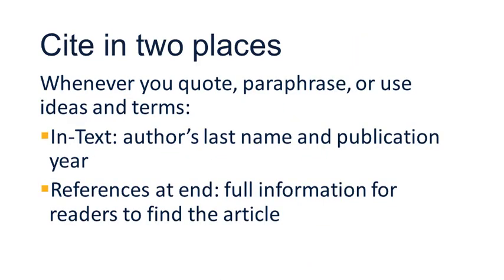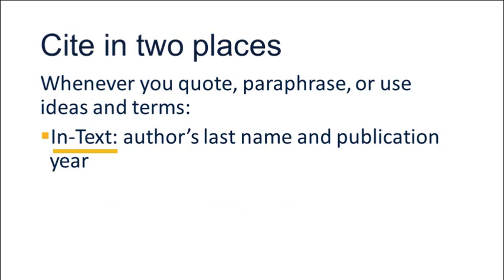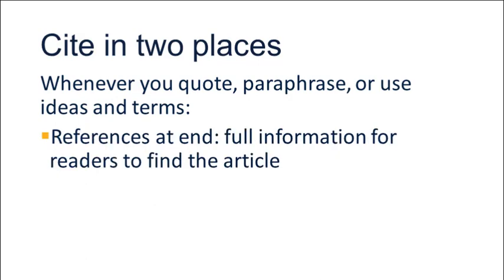In CSE, you must cite sources that you have paraphrased, quoted, or otherwise used to write your research paper. Cite your sources in two places: first, in the body of your paper, where you add a brief in-text citation with the author's last name and the publication year; and second, in the reference list at the end of your paper, where you'll give more complete information for each source, listed alphabetically by the author's last name and year.